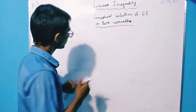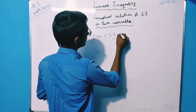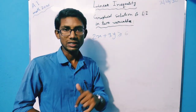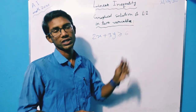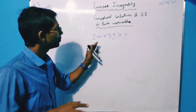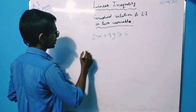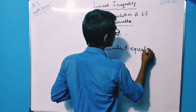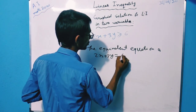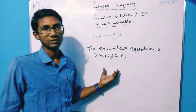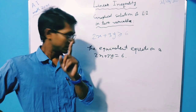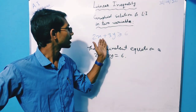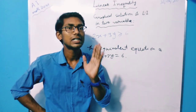Suppose a linear inequality is given: 2x plus 3y is greater than or equals to 6. Now, in previous classes you have learned how to solve an equation. If this was an equation, there would be no problem — you would be able to solve it. So the equivalent equation is 2x plus 3y equals 6. Now just draw the graph for this one. Mind it: for an equation, the graphical representation is exactly a line, but the graphical representation of a linear inequality will be a particular region.